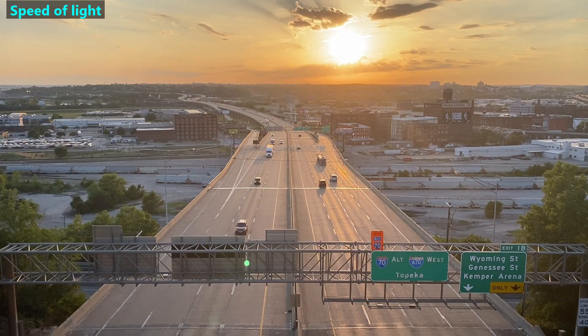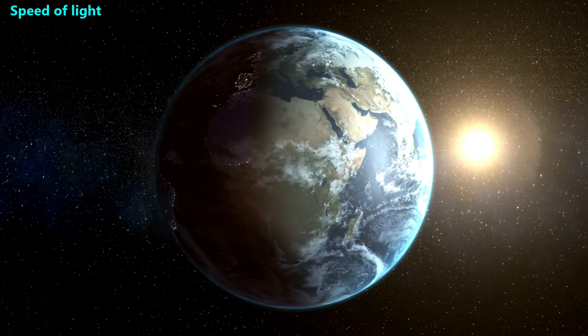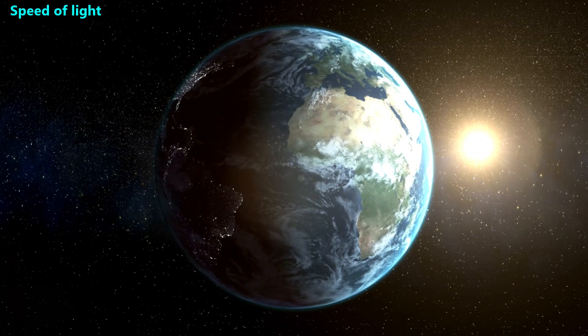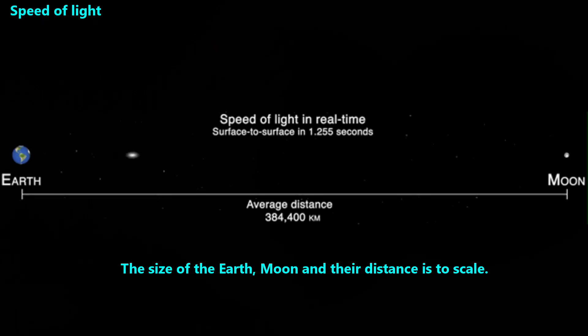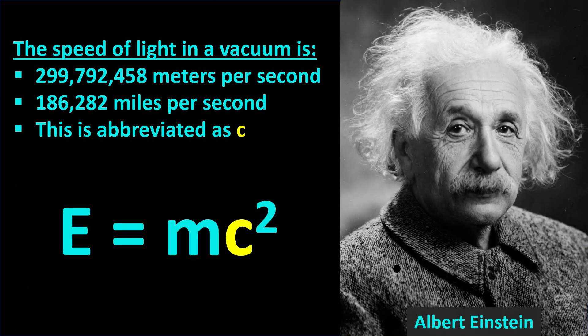Next, we'll discuss the speed of light. In the vacuum of outer space, light travels more than 186,000 miles in just one second. Light can go between the Earth and Moon in less than two seconds. Light is the fastest thing in the universe. We abbreviate the value for the speed of light with the letter C. You may recognize that letter from the most famous equation in science.